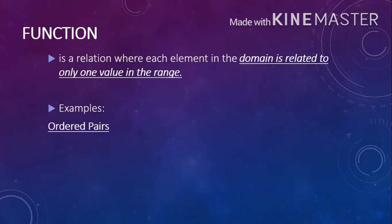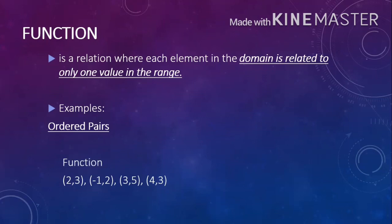Examples using ordered pairs. We have (2,3), (-1,2), (3,5), and (4,3). How do we determine if a set of ordered pairs is a function? According to the definition of function, each domain is related to only one value in the range. This set of ordered pairs is a function, because there is no repeating x value — each domain only appears once. We have 2, -1, 3, and 4.